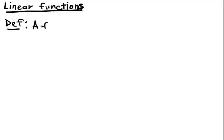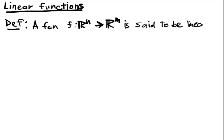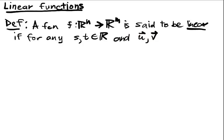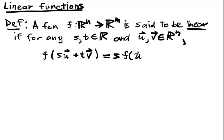Definition: A function f from R^n into R^m is said to be linear if for any s and t scalars and u, v in the domain R^n we have that f of su plus tv